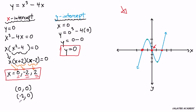And if we put positive 2, we'd get 8 minus 8 again, and we'd get 0. So those are our Cartesian coordinates for our x-intercepts.